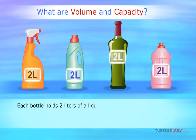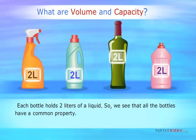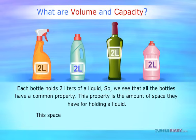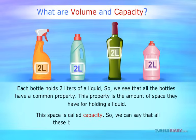So we see that all the bottles have a common property. This property is the amount of space they have for holding a liquid. This space is called capacity, so we can say that all these bottles have the same capacity.